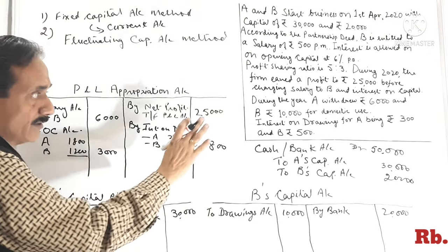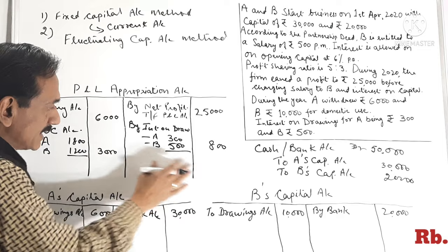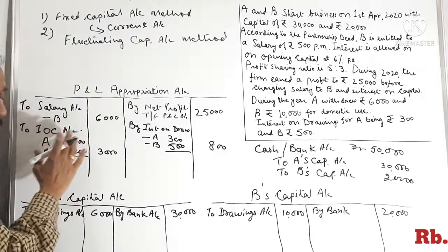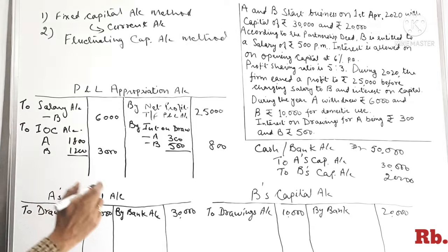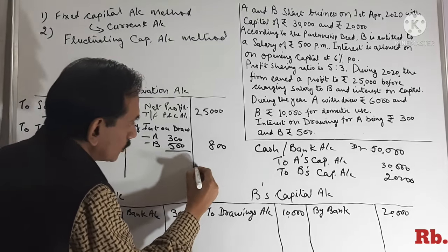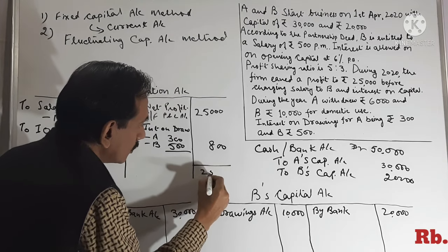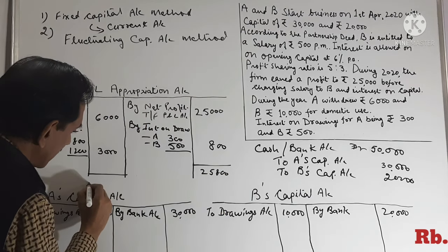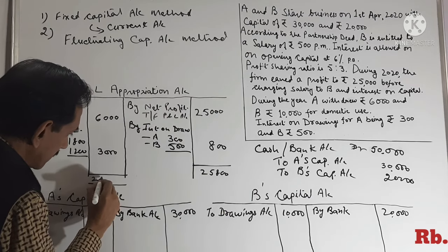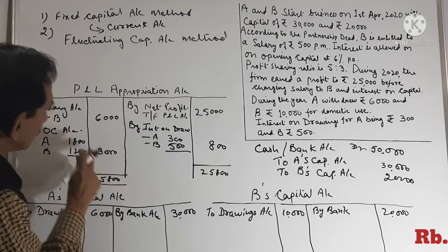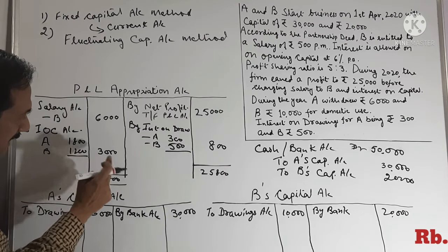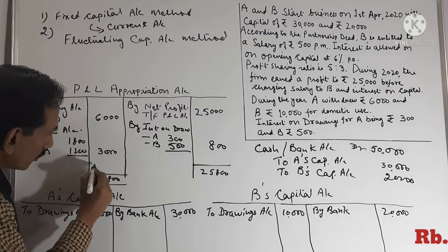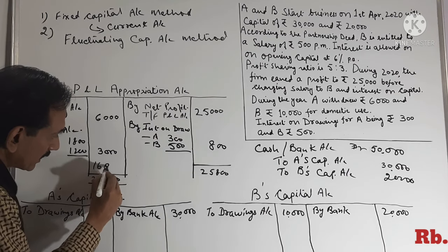Ab humari saari entries ho chuki hain. Ab hum iska balancing nikalte hain aur dekhte hain kitna profit aa raha hai jo A aur B ke andar share hoga. Total is Rs.25,800. Ab yahan bhi balancing kar denge. Is mein se Rs.9,000 minus karenge to Rs.16,800 hamare paas profit aa jayega.